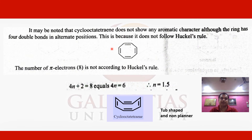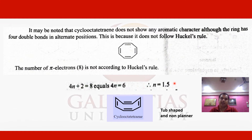Now let us take the example of cyclooctatetraene to determine whether this compound is aromatic, non-aromatic, or anti-aromatic. Cyclooctatetraene has four pi bonds, meaning eight pi electrons. When we apply the 4n+2 pi electron rule, we get a fractional value — n equals 1.5 — which means it does not follow Hückel's rule, since n must be an integer. Therefore it is not aromatic.